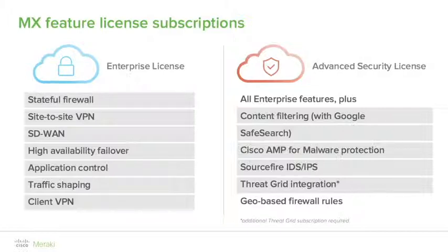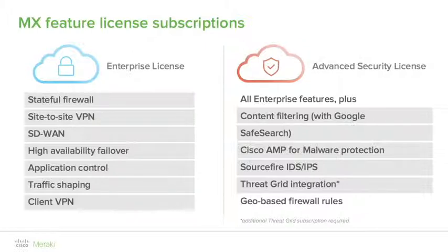The most important thing to know about these two licenses is that you must be running the same licensing level organization-wide. You may want to run advanced security at your head office but only enterprise at the branches — you're not able to do that. All MXs in the organization must be licensed to either all enterprise or all advanced security.